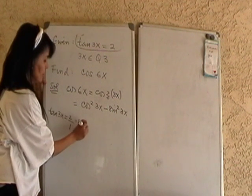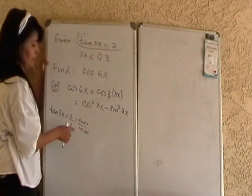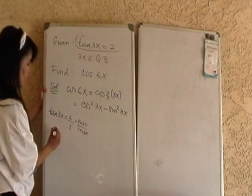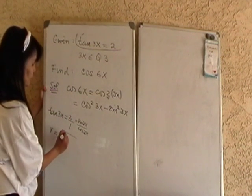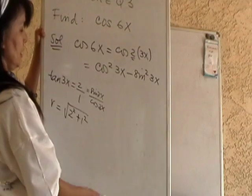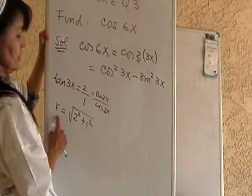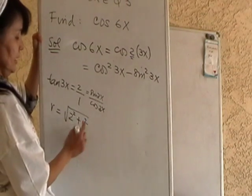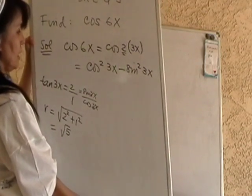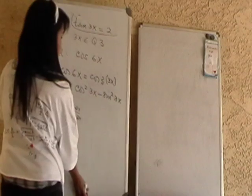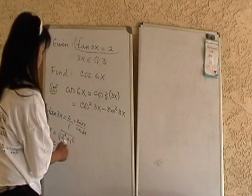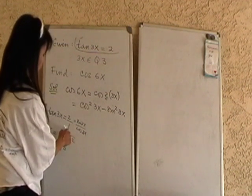So this is sine 3x over cosine 3x. But of course, you know by now that you cannot just say sine 3x is 2 and cosine 3x is 1. There's the r that got canceled. So you have to solve for r, and r is going to be the square root of 2 squared plus 1 squared. This is the y coordinate over the x coordinate for solving for the r. So you get root 5, square root of 5 is your r.